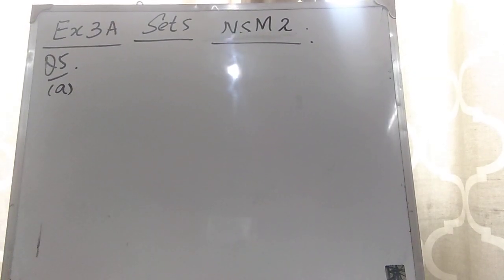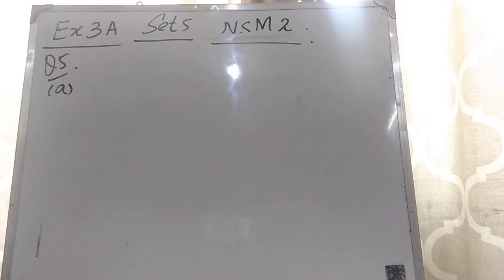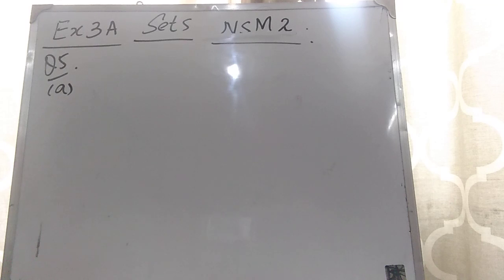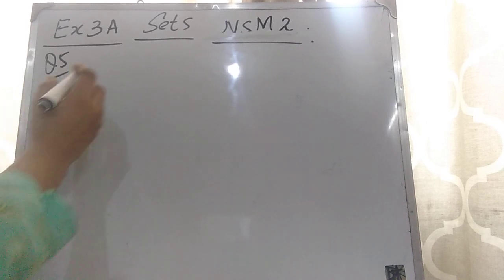Question 5: state whether each of the following collections is a well-defined set, giving a reason. A well-defined set means you can clearly count or identify the elements. Part A: pupils in my class who have two brothers. Here you can count — there will be many students who have two brothers and you can identify them. So this is a well-defined set: yes.